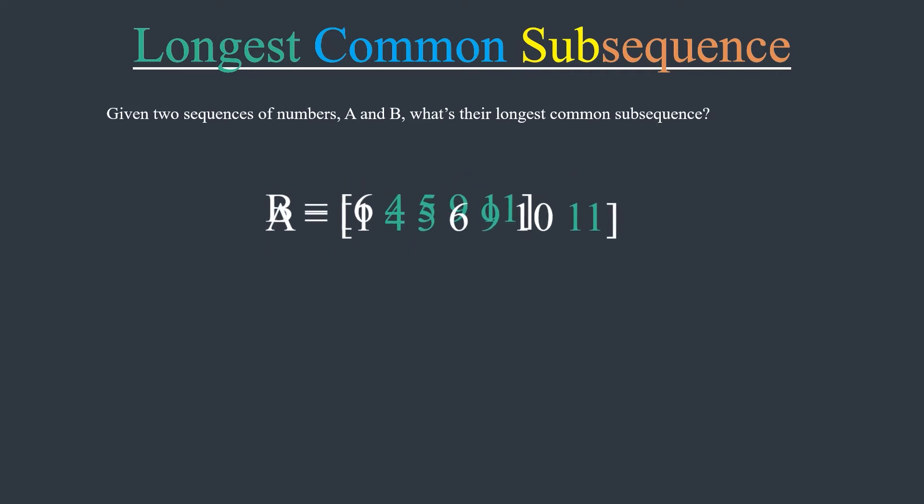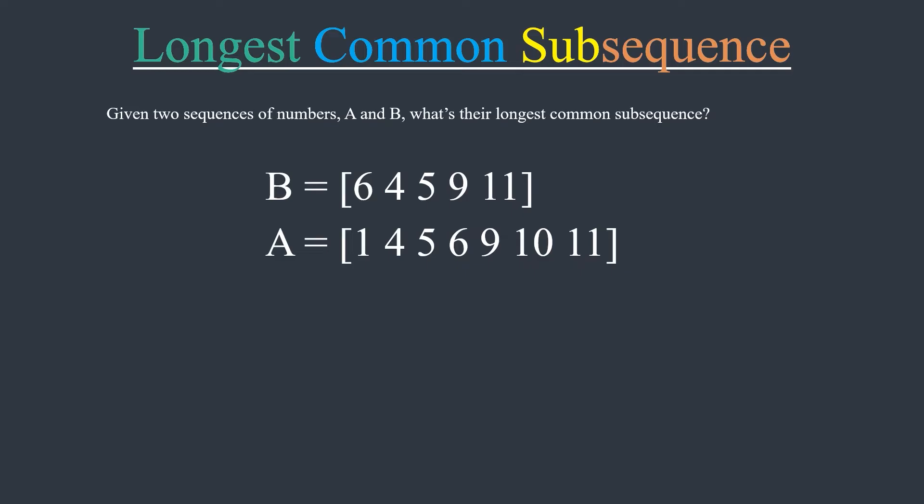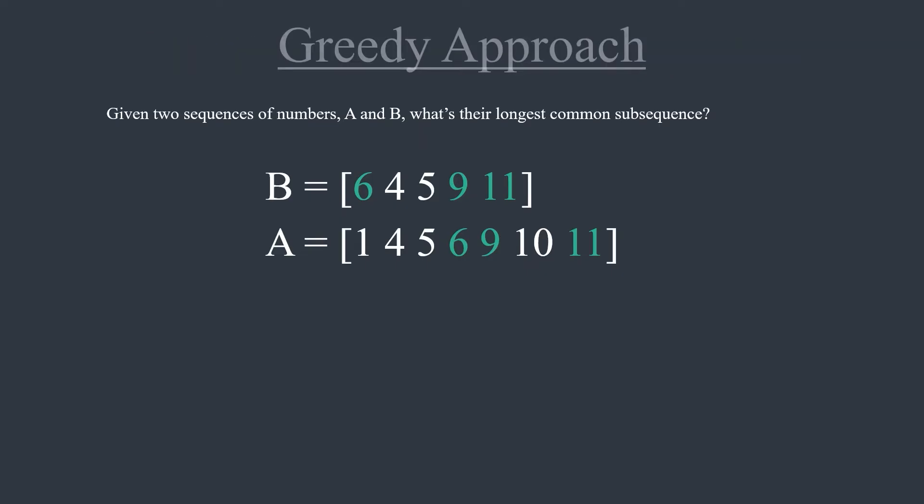This seems to work. But what if we swapped the arrays A and B and applied the same algorithm again? We would have chosen elements 6, 9, and 11, which are clearly not the longest common subsequence, so this greedy approach doesn't work.